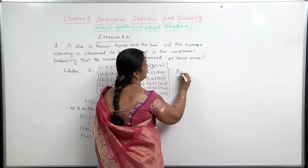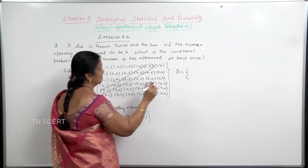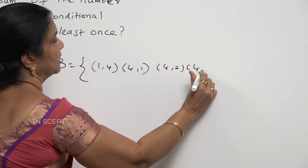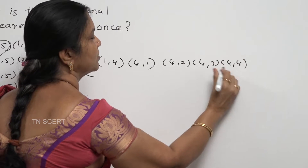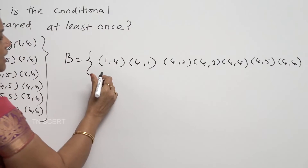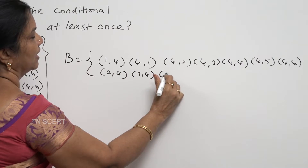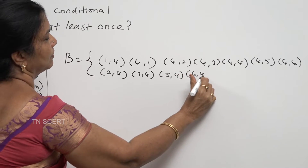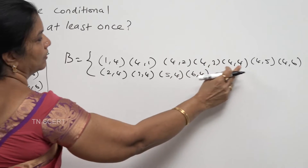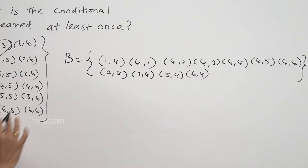B is the event that 4 has appeared at least once. The pairs where 4 appears are: (1,4), (4,1), (4,2), (2,4), (4,3), (3,4), (4,4), (4,5), (5,4), (4,6), (6,4). So n of B is equal to 11 elements.